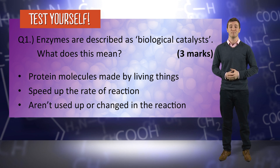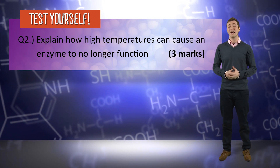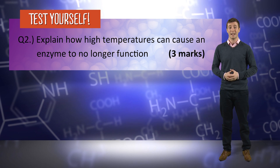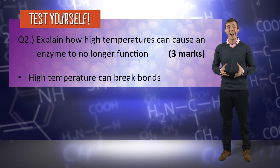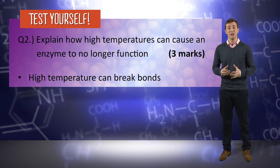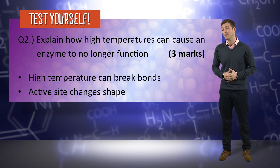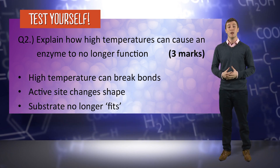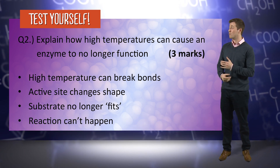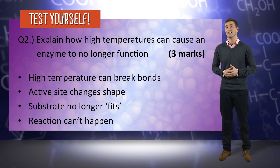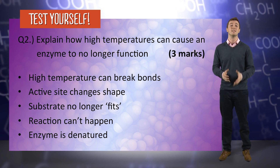Question number two: Explain how high temperatures can cause an enzyme to no longer function. Again, for three marks. First of all, a high temperature can break the bonds within the enzyme molecule. This will cause the active site to change shape. The substrate molecule no longer fits, and this means that the reaction can't happen. We can also describe the enzyme as being denatured.